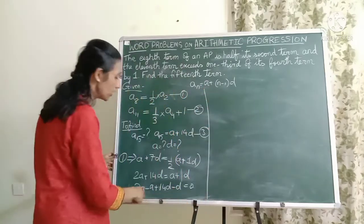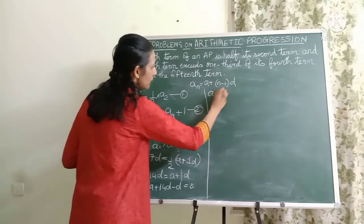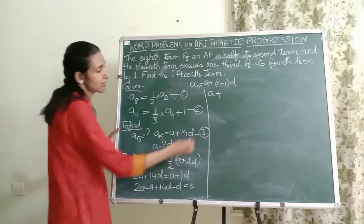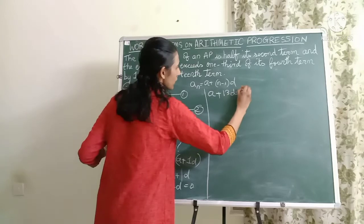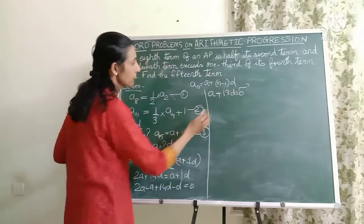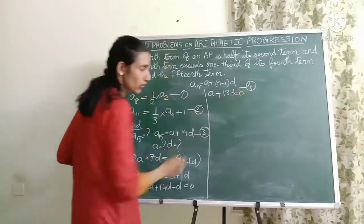What is there on the right hand side? Equals 0. Let us continue over here. 2A minus A will be A, 14D minus D will be plus 13D. This is equal to 0. Let me call it as the fourth equation.